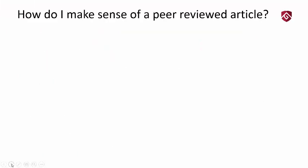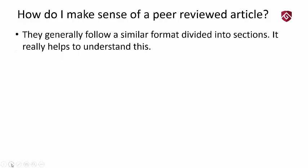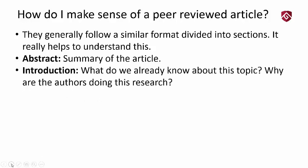Peer-reviewed articles generally follow a very similar format divided into sections. You have the title, of course, but after the title you have the abstract. The abstract is a summary of the article — sometimes it's a paragraph, sometimes it's a very detailed abstract showing you a sentence or two on each of the sections. There's generally always going to be an abstract. It's great to read the abstract first — that gives you a very quick summary of the article.